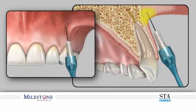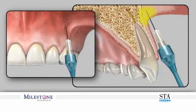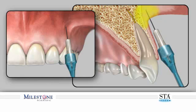If an aspiration test is required for the specific infiltration, perform an aspiration by depressing and releasing the foot control pedal. If the aspiration is negative, you can continue the infiltration injection and administration of anesthetic solution to the area. If aspiration is positive, reposition the needle and perform another aspiration by depressing and releasing the foot control pedal.